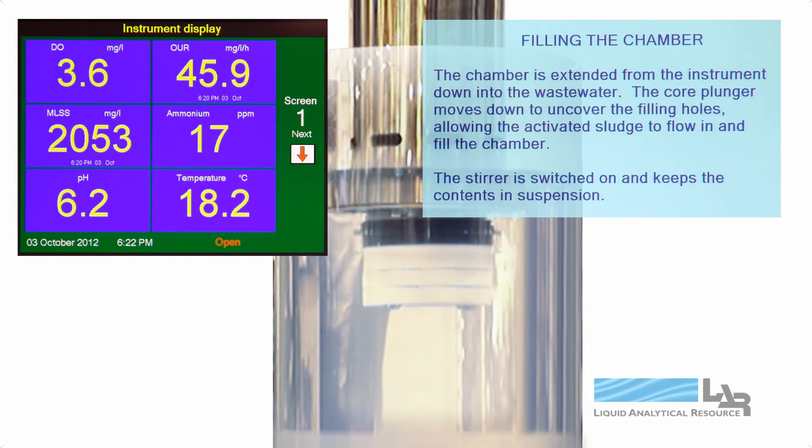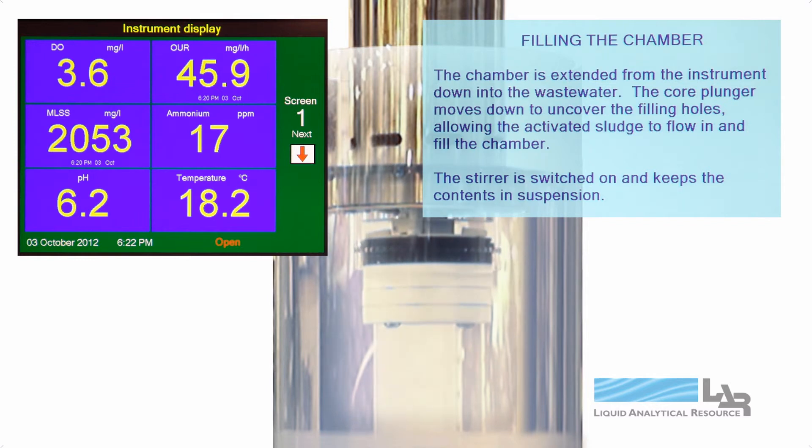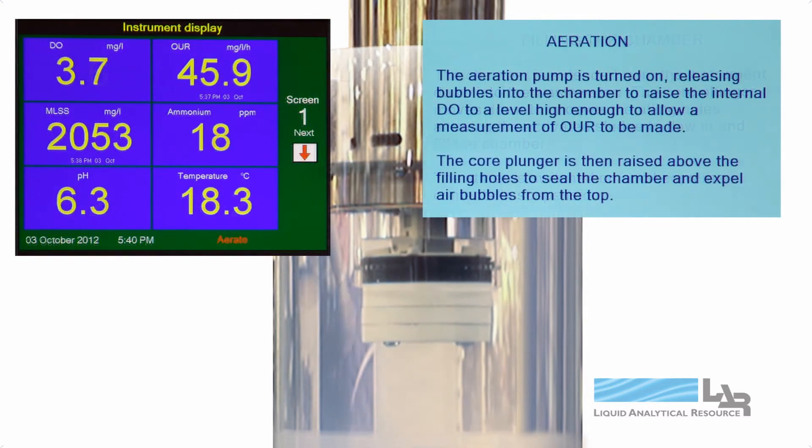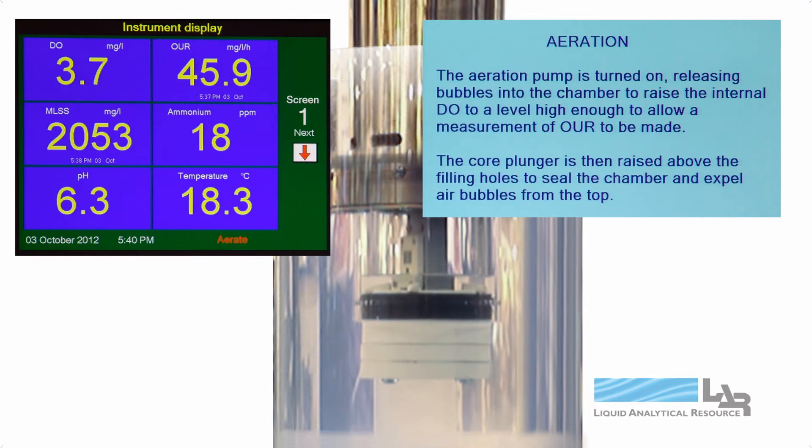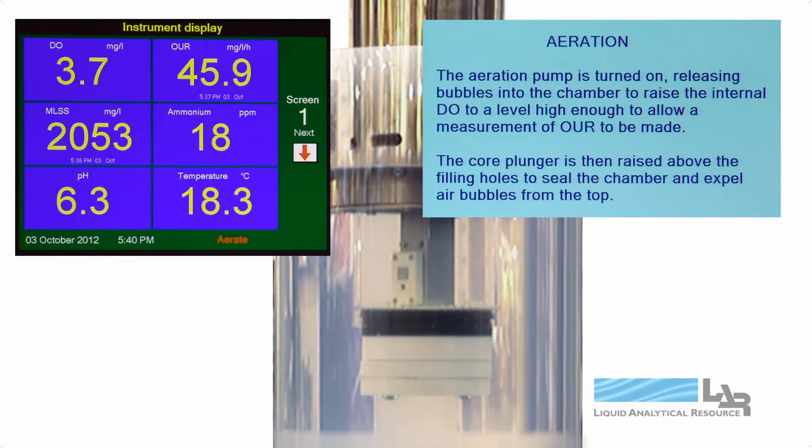During operation, a chamber is extended from the instrument into the wastewater. The core plunger moves down to uncover the filling holes, allowing sludge to flow in and filling the chamber. Stirring begins to keep the sludge contents in suspension.